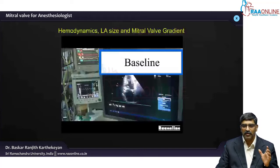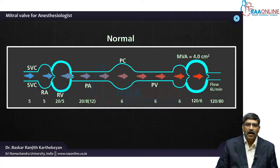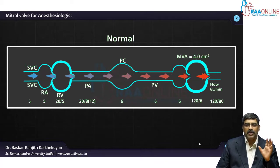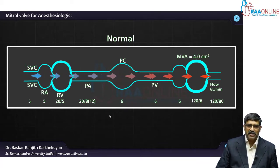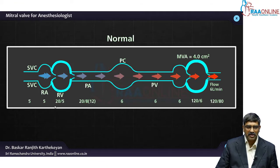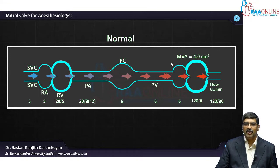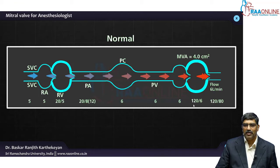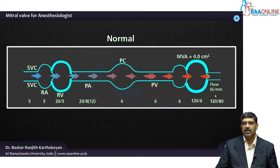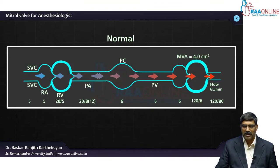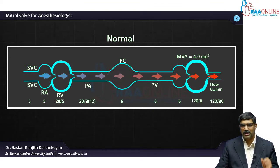Your intubation and induction should be very smooth. To see how the hemodynamics alter, this is the normal pressure chambers across the valve. The right atrial pressure is around 5, the right ventricular pressure is around 20 systolic and 5 diastolic, the PA pressure is around 20 by 8 with a mean of 12. The pulmonary capillary or pulmonary venous pressure is around 6, LA pressure is around 6 to 10, LV pressure is around 120 by 6, and cardiac output is around 6 liters per minute. The normal mitral valve area is around 4 centimeters square.